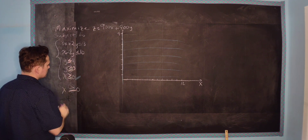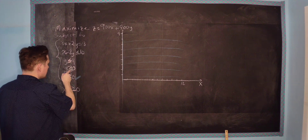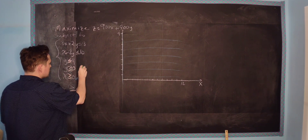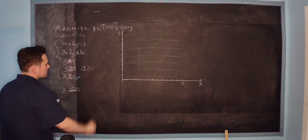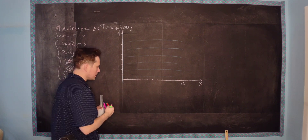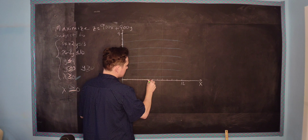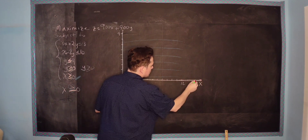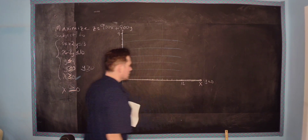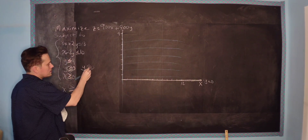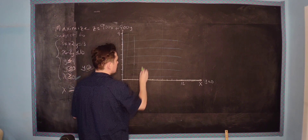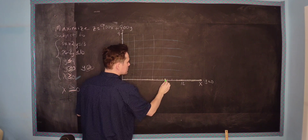Now it says y is greater than or equal to 0. Same logic applies — just break this down. The equal-to part means y equals 0, which is the x-axis, because for any point along the x-axis, y is equal to 0. Then the greater-than part means you shade right above, because above the x-axis y is always greater than 0.